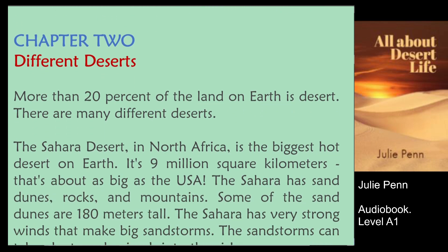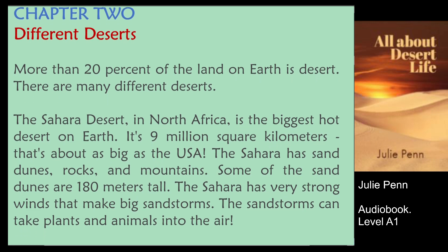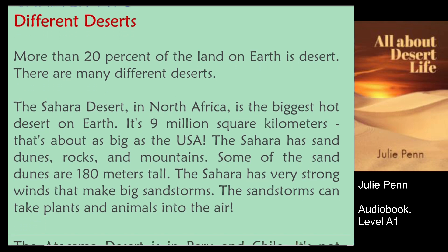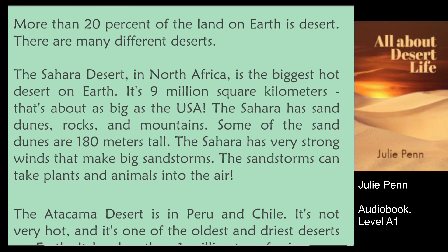Chapter 2: Different Deserts. More than 20% of the land on Earth is desert. There are many different deserts. The Sahara Desert in North Africa is the biggest hot desert on Earth. It's 9 million square kilometers.